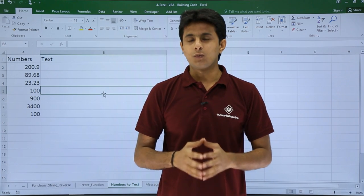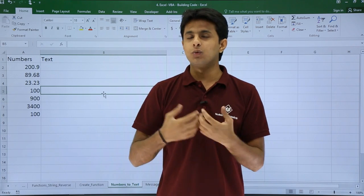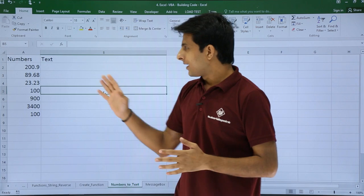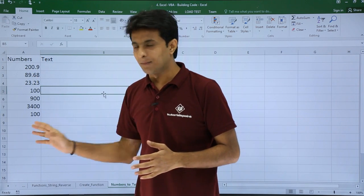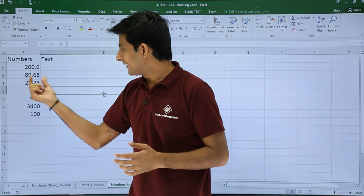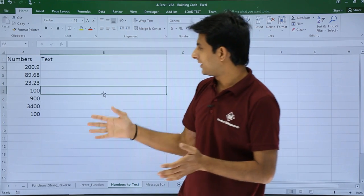In this video we'll see a new function which converts a number into text. For example, if you see on the screen I have some numbers given here: 200.9, 89.68, 23.23 and so on.